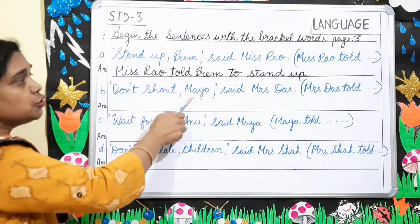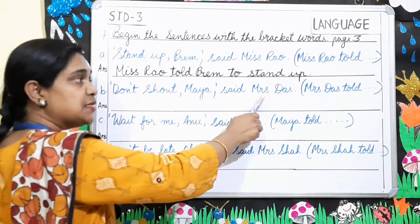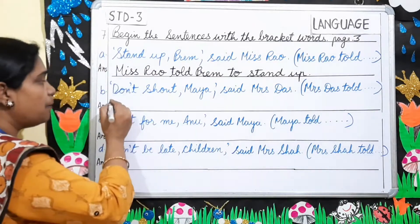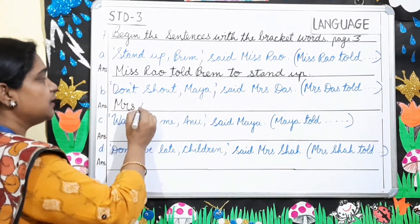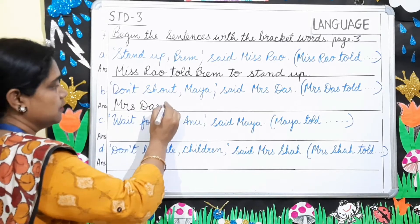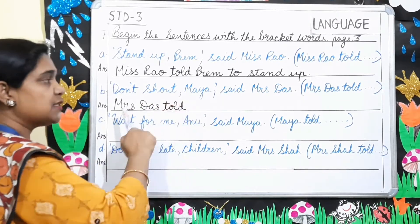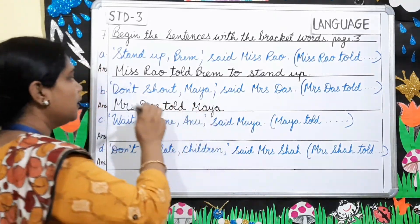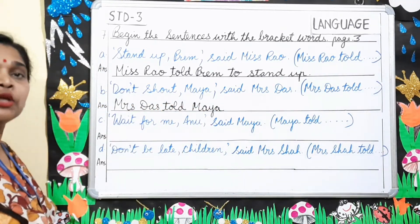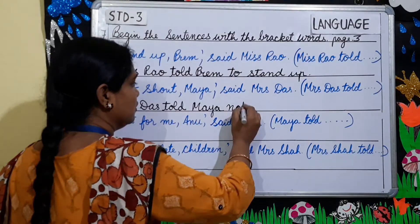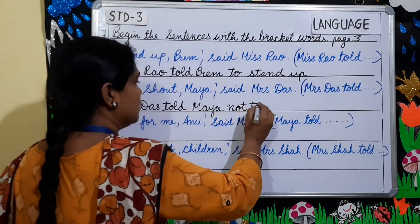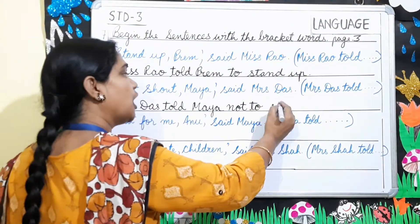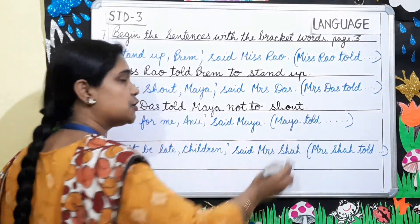Number B: 'Don't shout, Maya,' said Mrs. Das. In the bracket it's given 'Mrs. Das told.' So begin your sentence with 'Mrs. Das told.' Mrs. Das told Maya — here 'don't' will change to 'not to.' So: Mrs. Das told Maya not to shout.